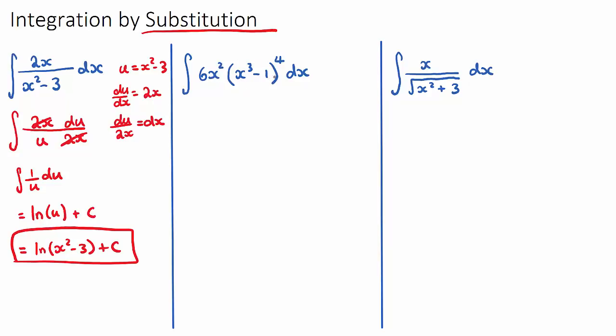We can identify here a parent, which will be x cubed minus 1. The derivative of this will be 3x squared, and that's also in the question, kind of. It's just out by a scalar, by a factor, which is okay. Once we've identified the parent, u is x cubed minus 1. We derive the parent, du/dx will be 3x squared. We get dx to be the subject, so du/3x squared will be dx.